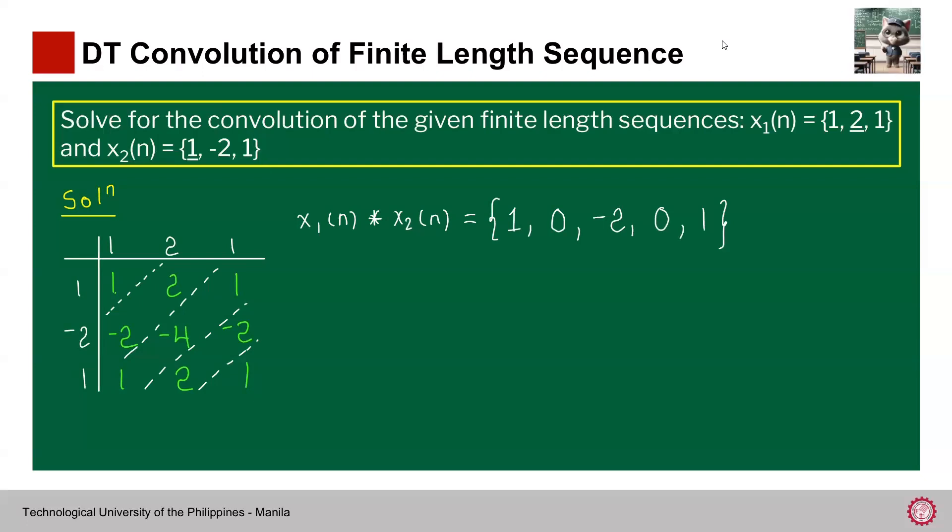However, this will not be complete without us indicating where our index 0 is. Students often make mistakes here. We'll use the given information. We know that x₁, its index 0 is at the 2. So basically, this is the index 0. If this is the index 0, do you agree that this is index negative 1 and this is index positive 1? Now for the second signal, the arrow is supposed to be here. So therefore, this is index 0. If this is index 0, this is index positive 1, and this is index positive 2.